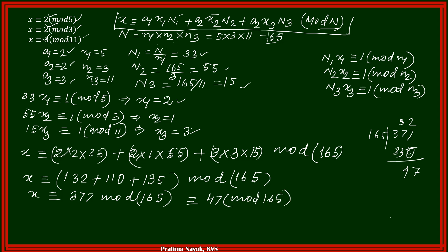So this equals to congruent to 47 modulo 165. So what is the remainder? The remainder is 47. So the answer is 47. X is equal to 47.